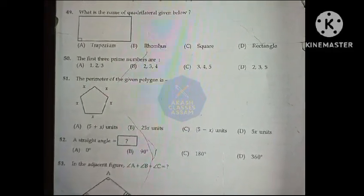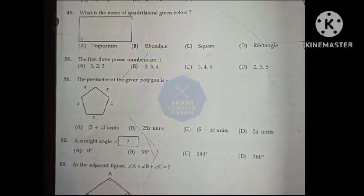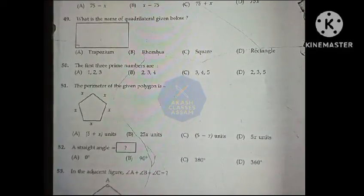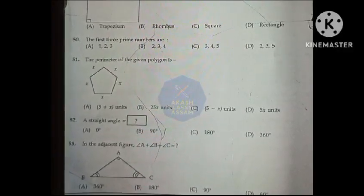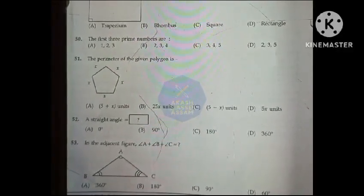The perimeter of the given polygon is: Option D. A straight angle: Option C, 180 degree. In the adjacent figure, angle A plus angle B plus angle C equals to: Option D.